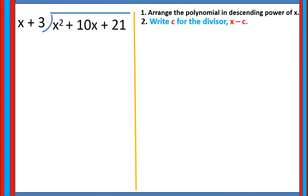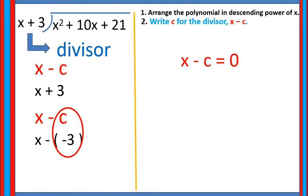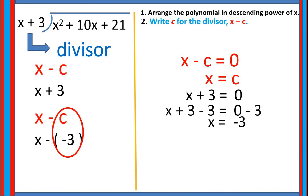Second, write c for the divisor x minus z. In our given example, x plus 3 is our divisor. It should be in the form x minus z, but it is written as x plus 3, so we may write that as x minus negative 3, which is now in the form x minus z. Therefore, the value of z is negative 3. We may also write the expression x minus z and equate that to 0 so that we can find the value of z — that is, x equals z. So in our example, x plus 3 equals 0, and subtracting both sides, x is equal to negative 3. And negative 3 is also the value of z.